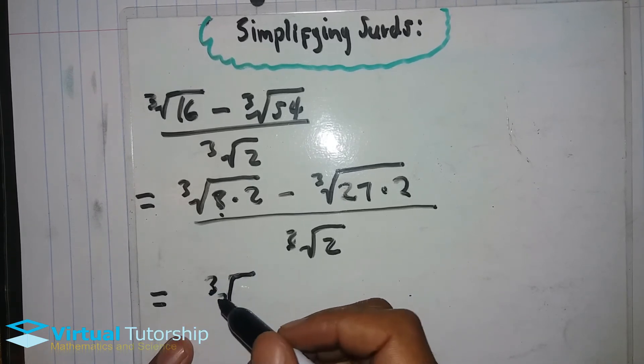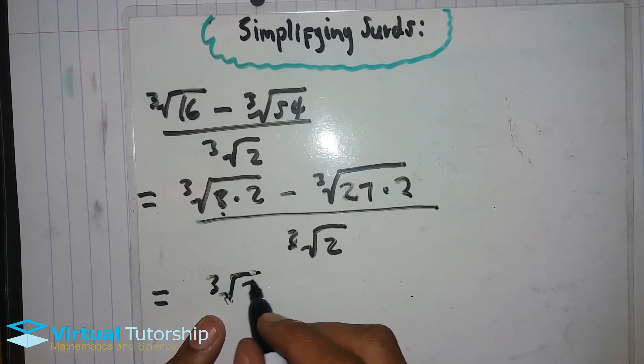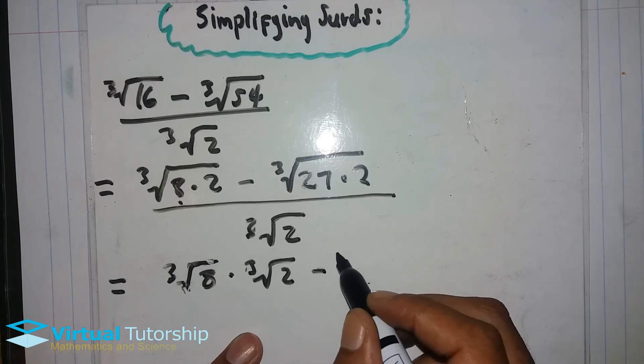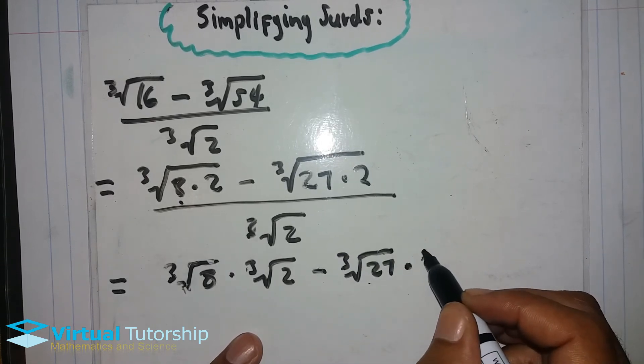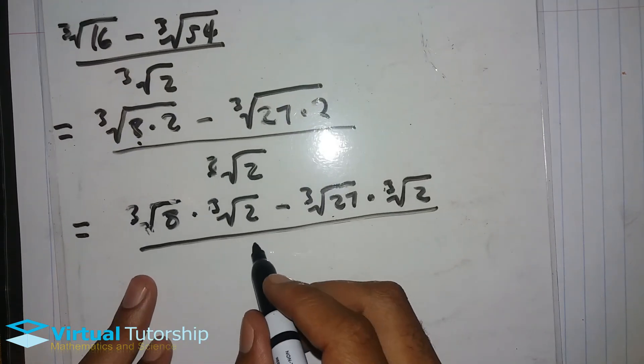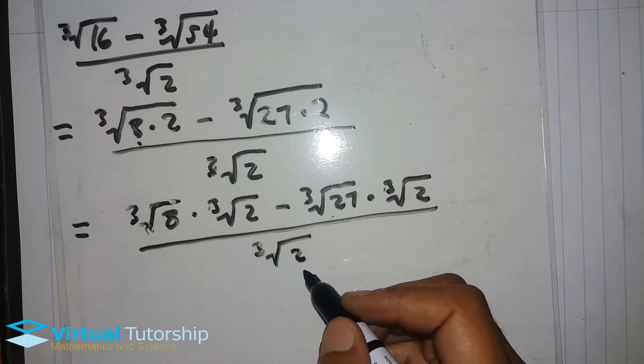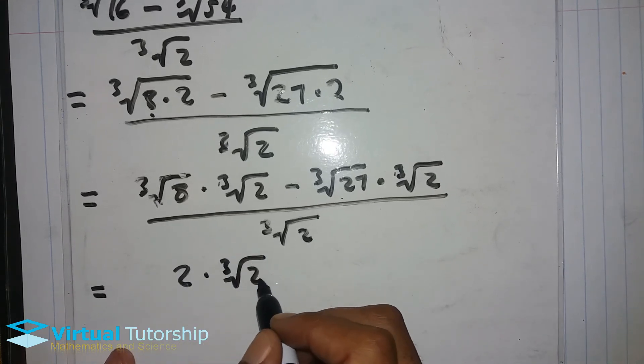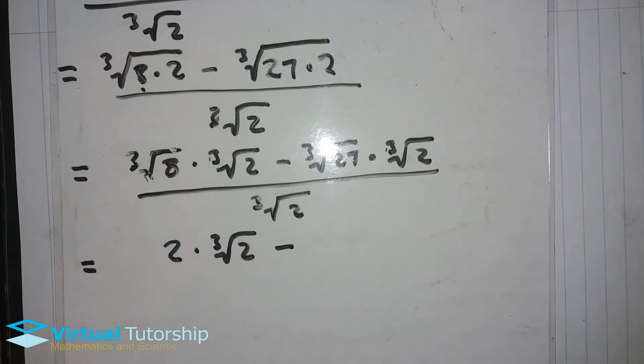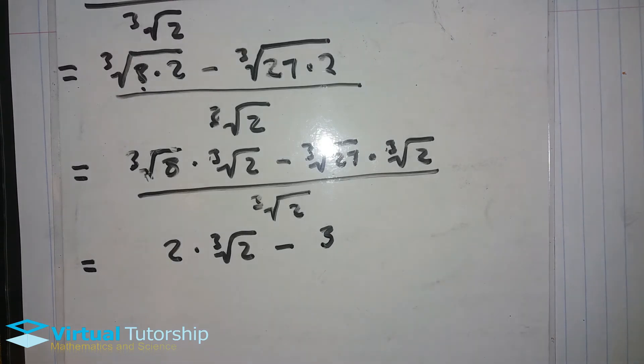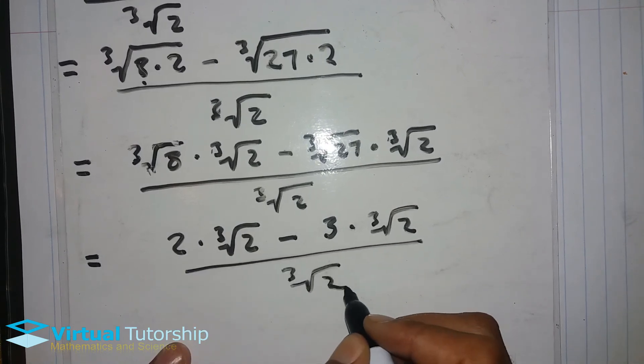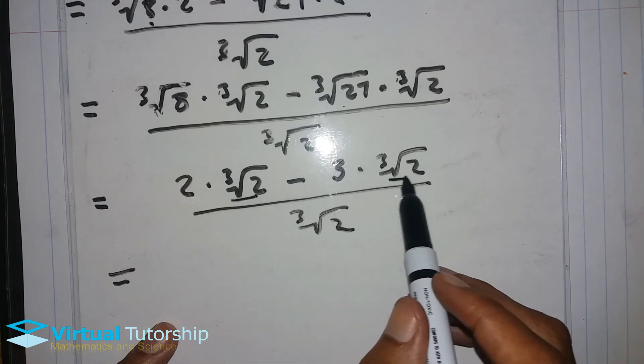Over the cube root of 2. So breaking it down according to the first principle for multiplication of radicals, it's the cube root of 8 times the cube root of 2 minus the cube root of 27 times the cube root of 2 over the cube root of 2. The cube root of 8 is 2 times the cube root of 2, and the cube root of 27 is 3 times the cube root of 2 over the cube root of 2.